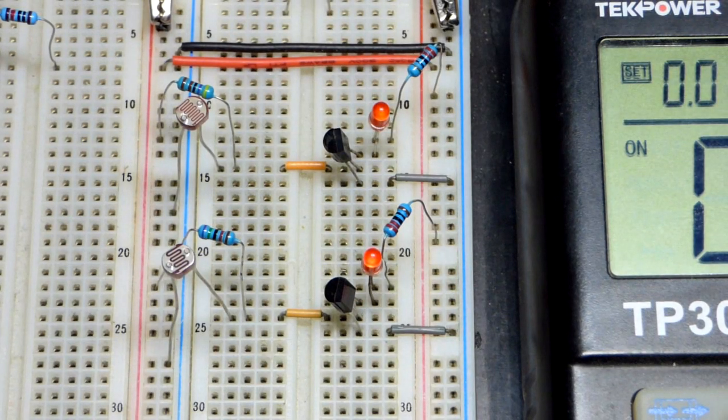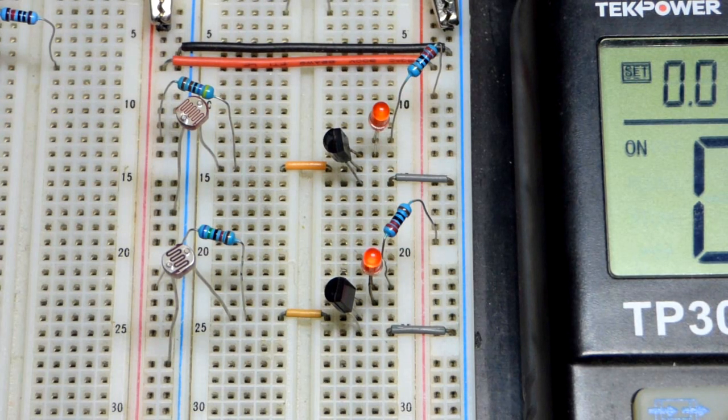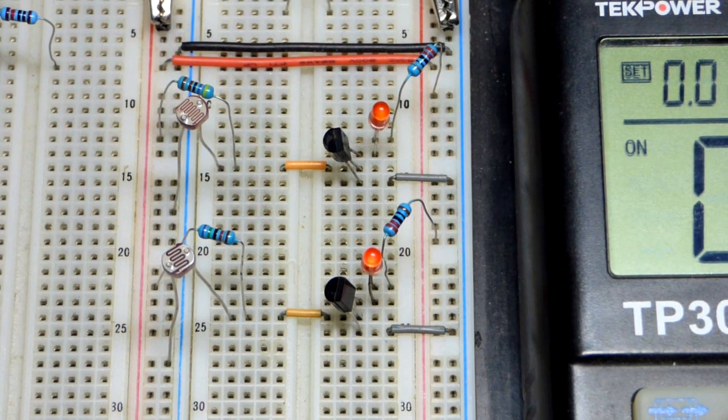The main thing is, if it gets dark enough, the transistors pretty much turn on fully. And if it's bright enough, they pretty much turn off fully. That is what you want for a switch. Of course, these are not perfect switches.